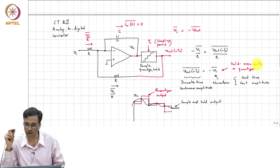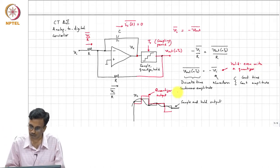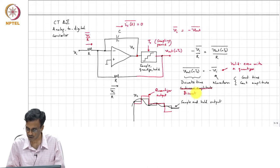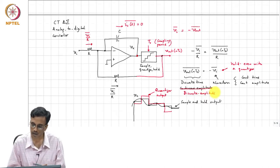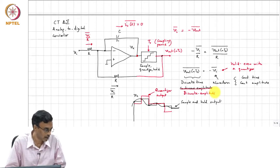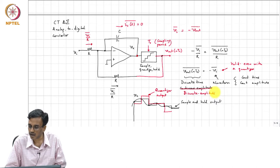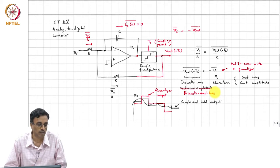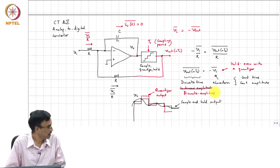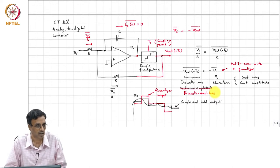And therefore, V_out of T is now no longer continuous amplitude — it is discrete amplitude. So we now have a system which is discrete both in amplitude and time, and therefore it is a digital quantity. It is related to the average property of the analog waveform V_I of T, and therefore this is an analog-to-digital converter.